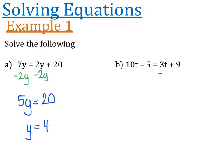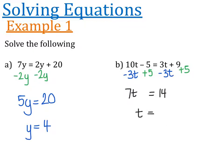We're going to get rid of this 3t on the right hand side by subtracting it, doing the same thing on the left hand side. I want to get the letters together and the numbers together. I'm also going to get rid of this minus 5 by adding 5 to both sides. 10t minus 3t is 7t; minus 5 plus 5 is 0, which is exactly what we wanted. 3t take away 3t is nothing, and 9 plus 5 is 14. So now we've got 7t is equal to 14, divide both sides by 7, and t is equal to 2.